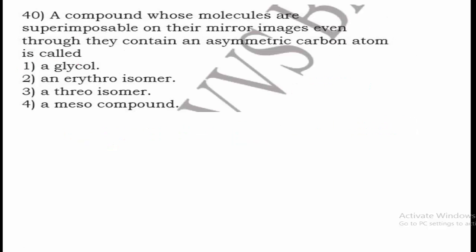Question 40: A compound whose molecules are superimposable on their mirror images, even though they contain an asymmetric carbon atom, is called what? Such compounds are called mesocompounds, because the molecules are superimposable on their mirror images despite containing an asymmetric carbon. Option 4 is the right answer.